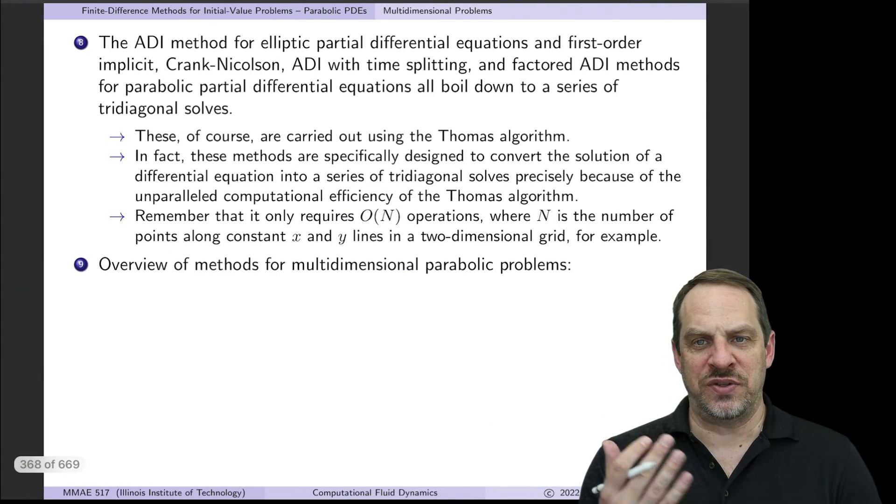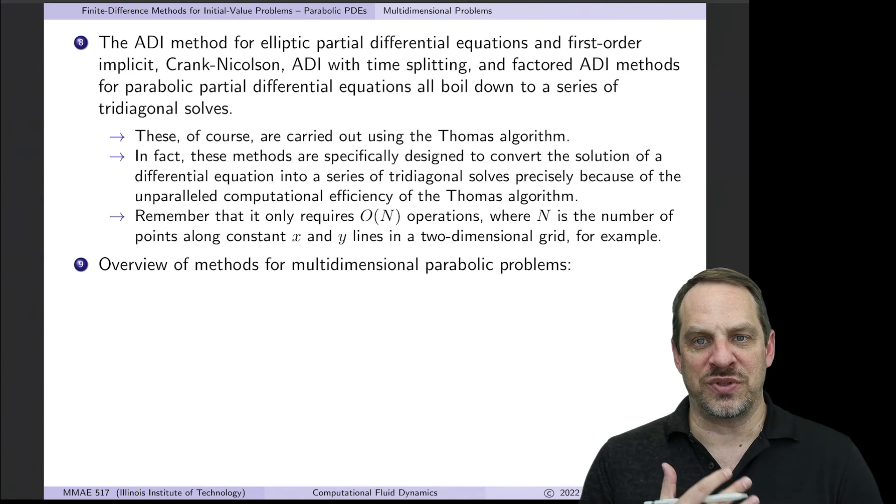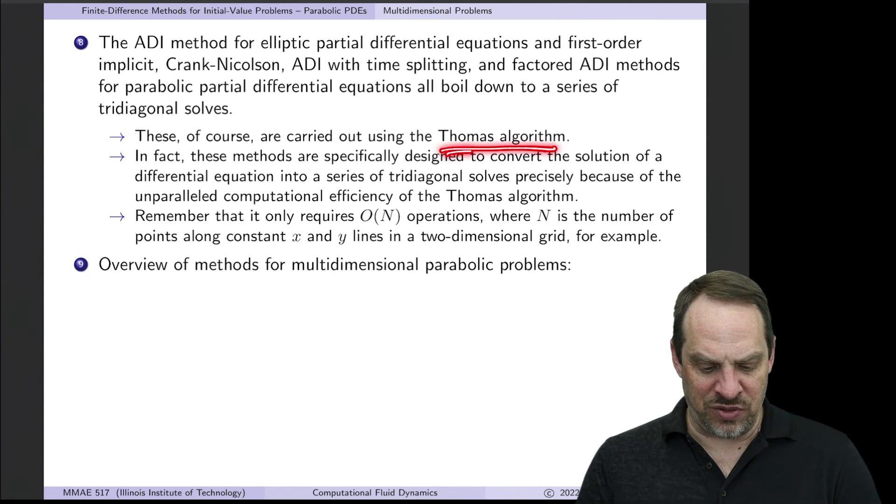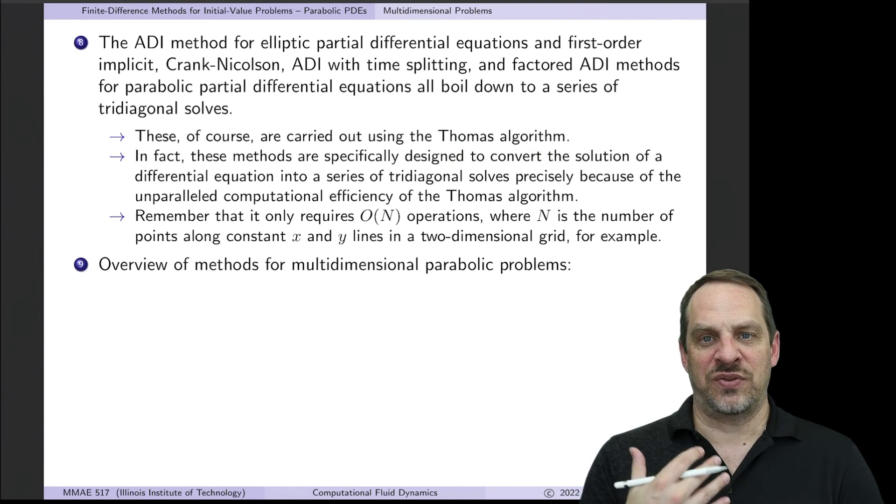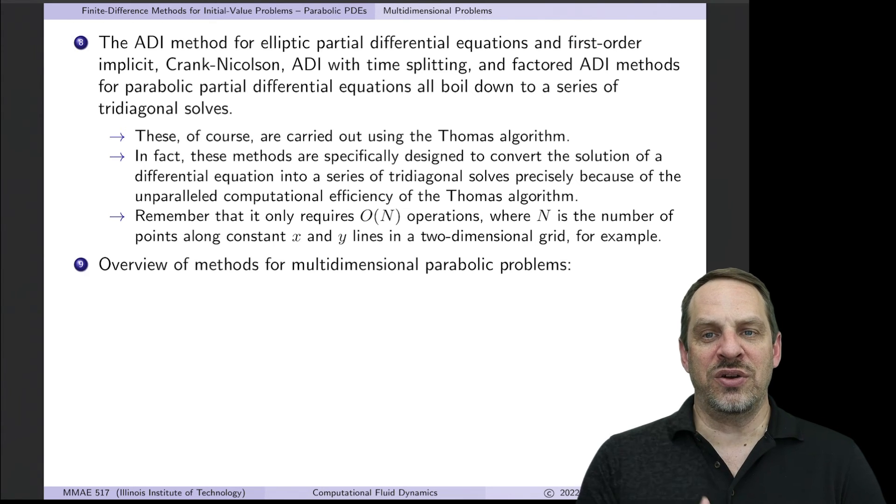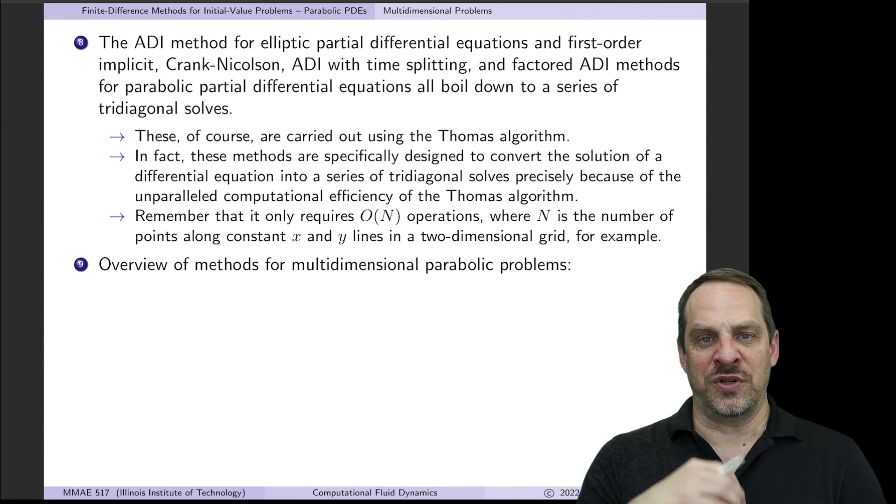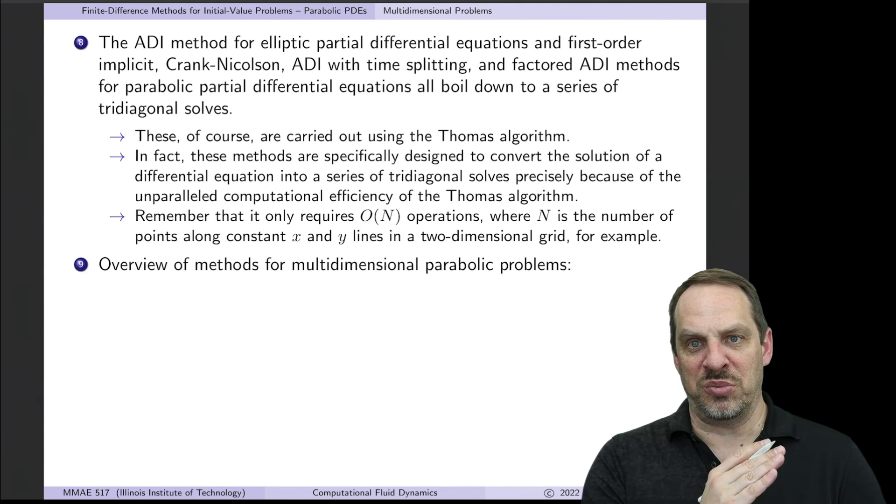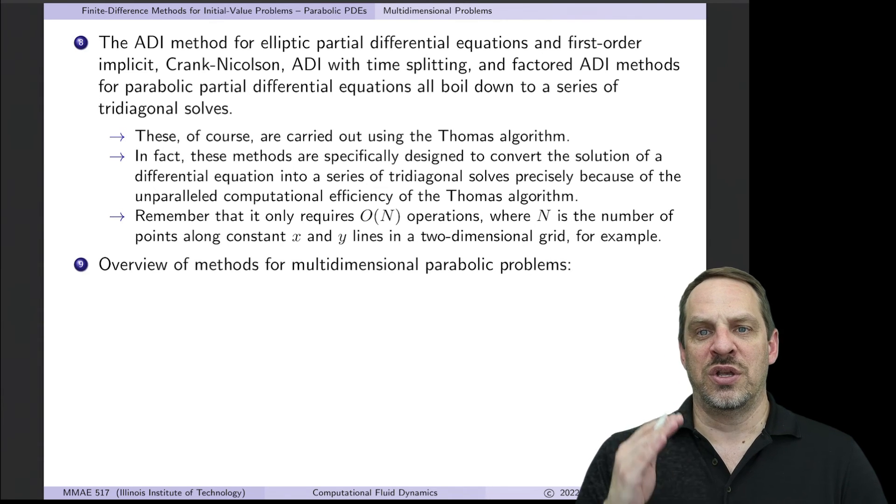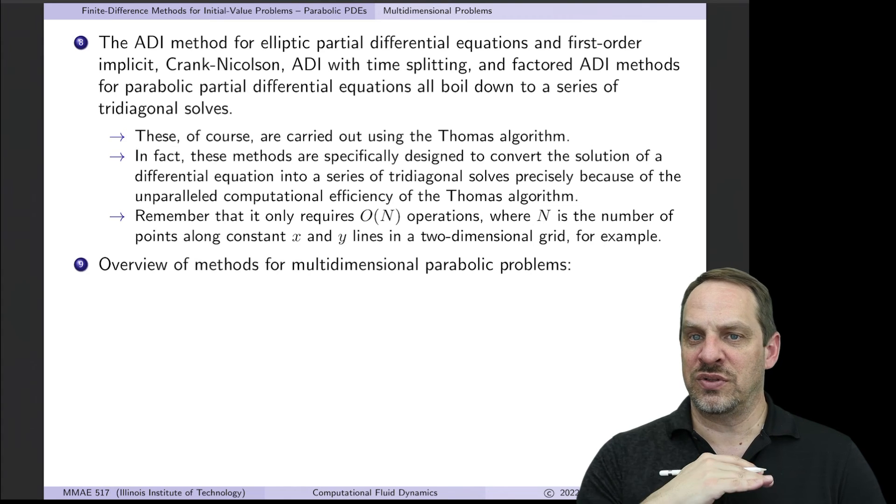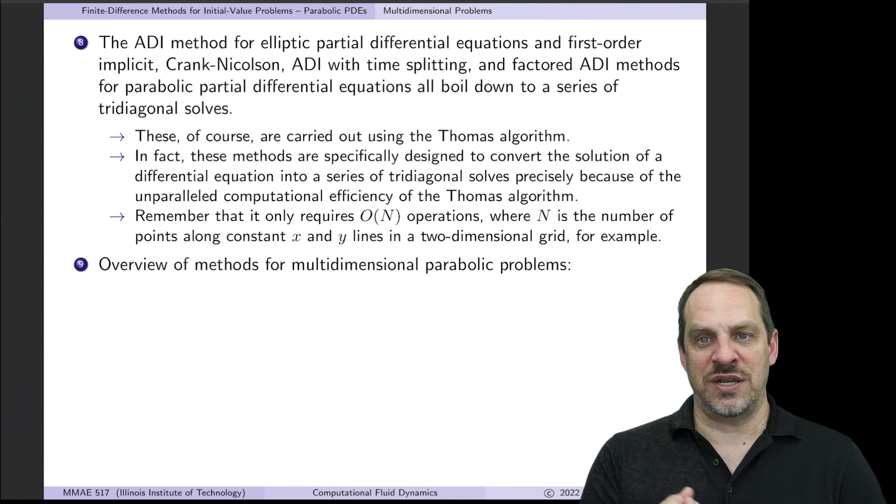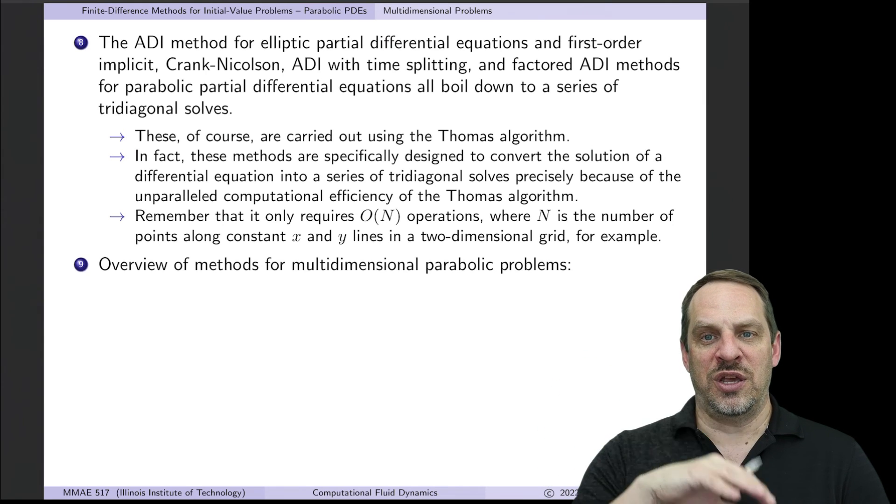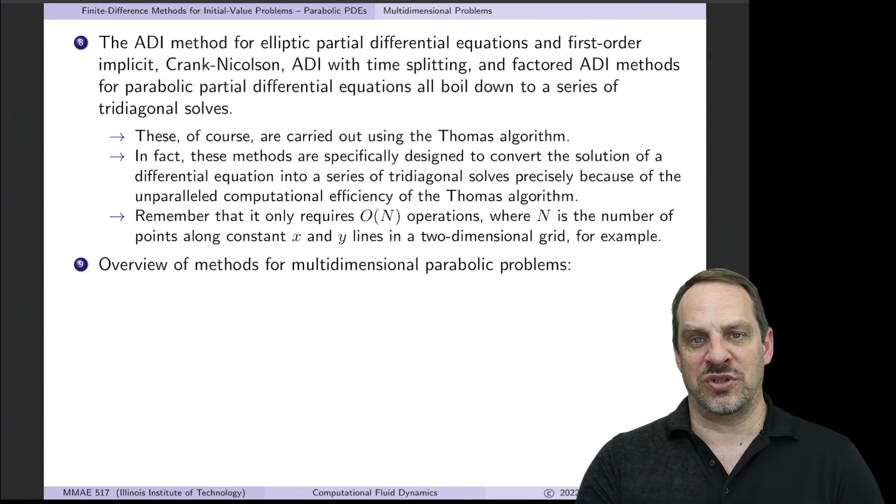And then there's one other thing that I've been emphasizing all throughout our discussion, elliptic problems and parabolic problems as well. And that is the advantage of boiling things down to tridiagonal systems of equations, because then we can use the Thomas algorithm. So in fact, the methods that we've just been discussing in these last few videos have all been answering the question in different ways. How can I get the time-marching process to boil down to simply solving tridiagonal systems? Because it is so efficient. It's order N operations. It doesn't get any better than that. If I double the number of points, it only doubles the amount of time. So if we can boil these more complex problems down to these tridiagonal solves, all the better. So that's been a lot of the motivation behind the techniques that we've been showing you throughout the elliptic as well as the parabolic cases.